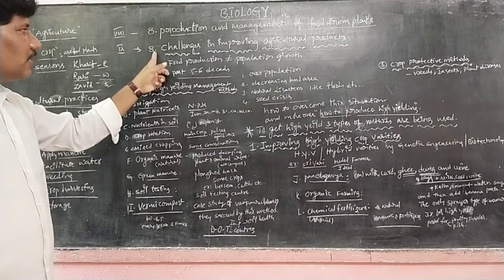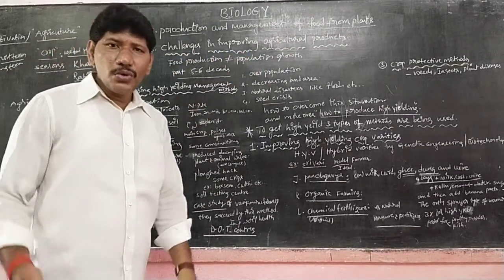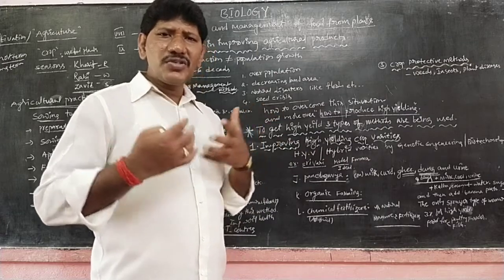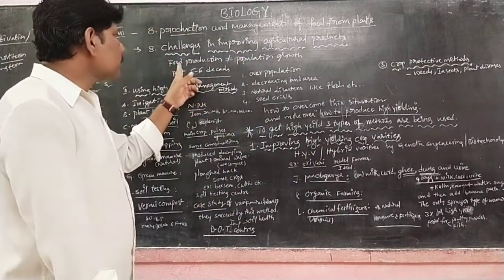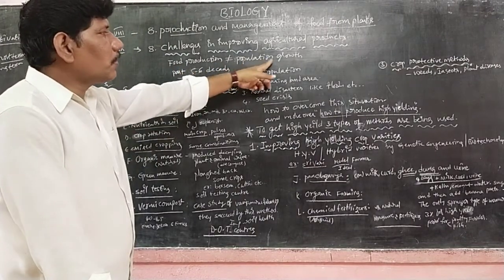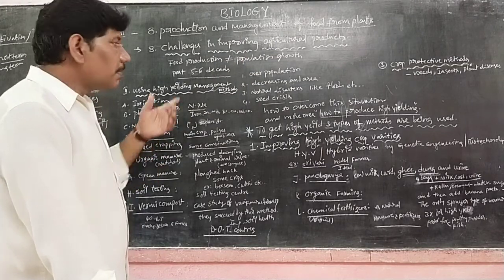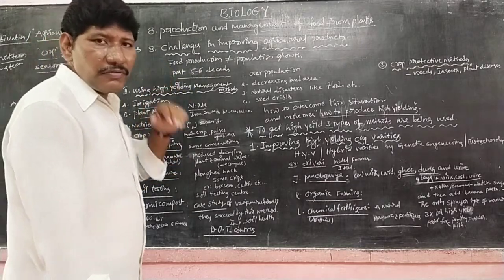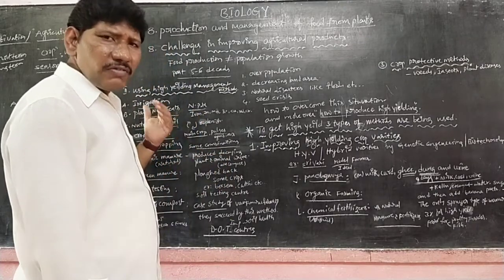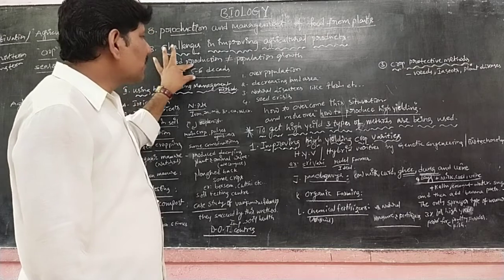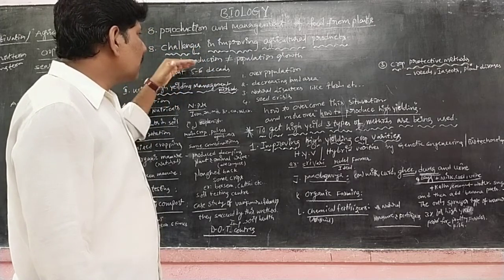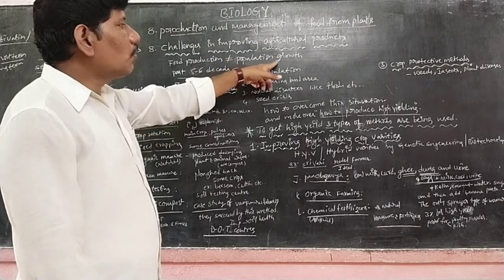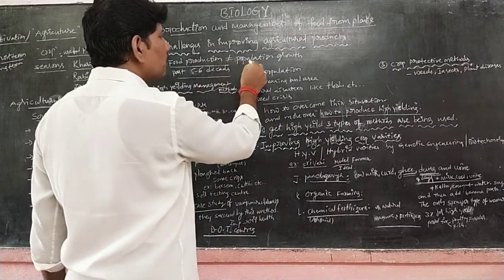Now coming to the ninth class, eighth chapter: challenges in improving agricultural products. As a farmer doing agricultural practices, each and every step is a challenging factor. Food production is not at all equal to population growth. Based on the agriculture department statistical report of past five to six decades — from 1951 to 2020 — this clearly indicates that food production is not at all equivalent to the demand of an overpopulating country. Food production is not sufficient to meet population growth.